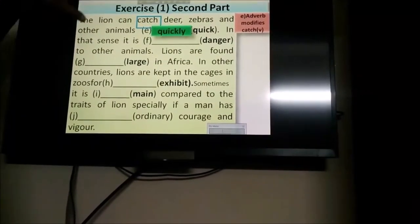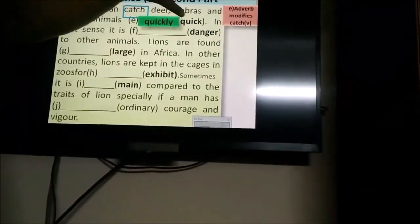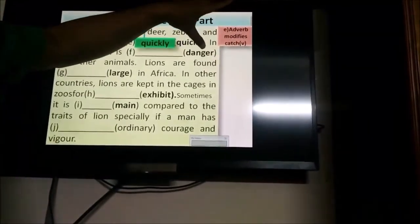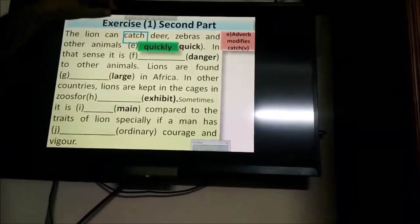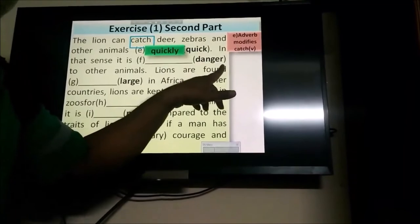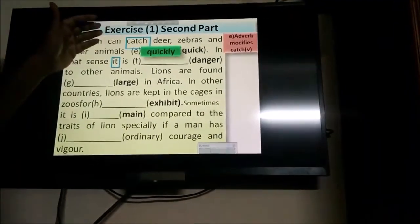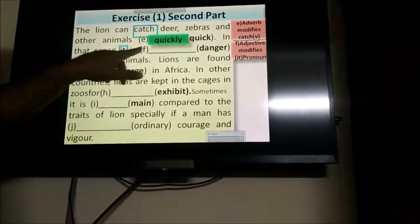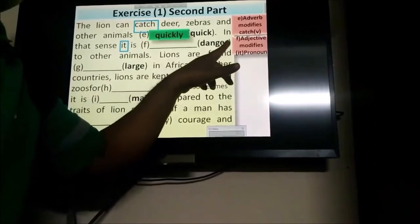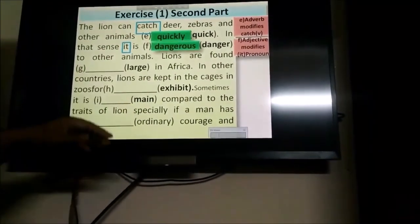In that sense, it is danger to other animals. Danger is a noun here. And you need to turn this noun into an adjective. So, O-U-S is a suffix that will be added here. And in the same way, you know that adjective modifies the pronoun it. That's why O-U-S suffix will be added. So, the answer will be dangerous.